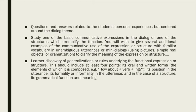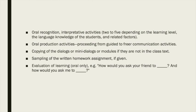Learners discover generalizations or rules underlying the functional expression or structure, covering at least four points: its oral and written forms, the elements of which it is composed (e.g., 'how about' plus verb plus '-ing'), its position in the utterance, its formality level, and in the case of a structure, its grammatical function and meaning. This is followed by oral recognition and interpretative activities, then oral production activities proceeding from guided to freer communication. The lesson concludes with copying of dialogues if not in the class text, sampling of written homework, and evaluation of learning — oral only, e.g., 'How would you ask your friend to...?' and 'How would you ask me to...?'